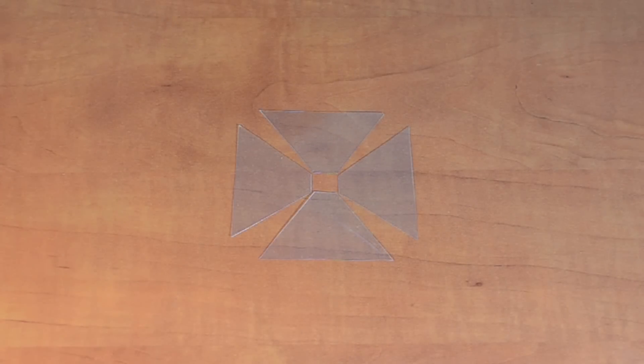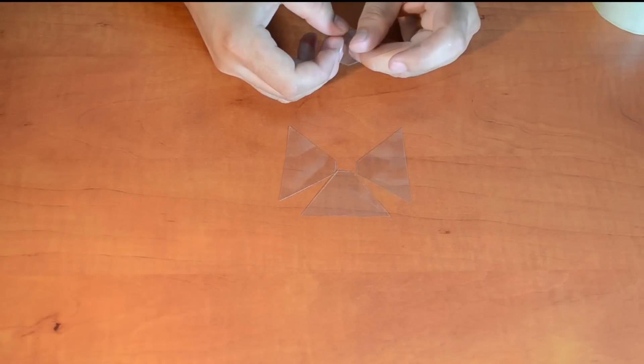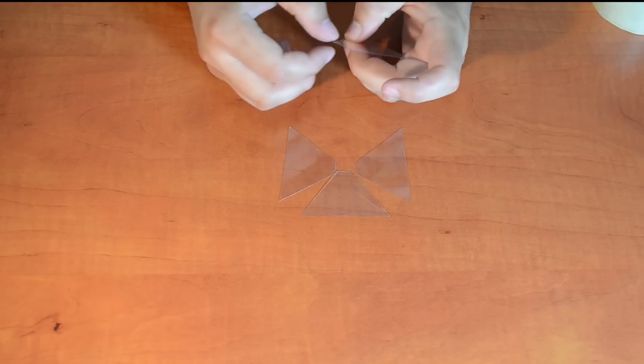After you have four identical pieces, use duct tape to put them together. Cut off small pieces of duct tape to make your work easier.